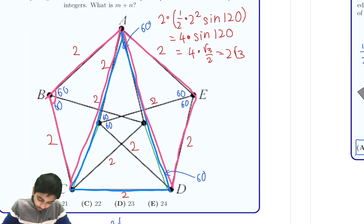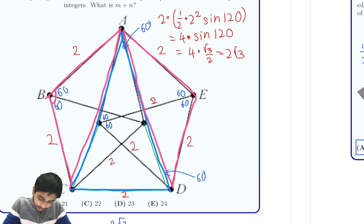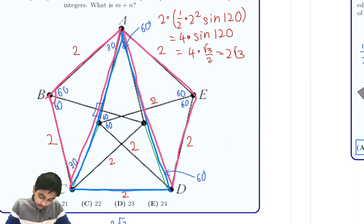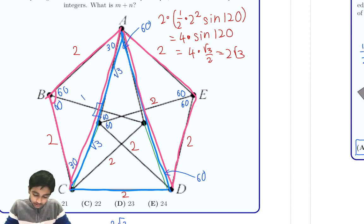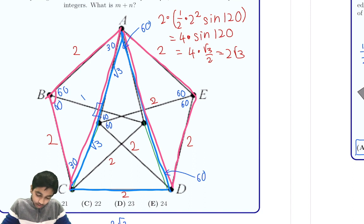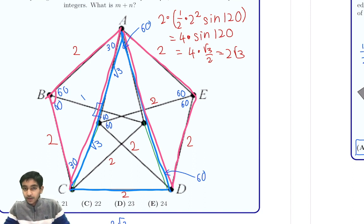Another way to see this: both angles are 60 degrees, so the remaining angles are 90 degrees, giving us 30-60-90 triangles with sides 2, 1, √3. That also gives us area = √3 per triangle, so two root three total. Both ways work.